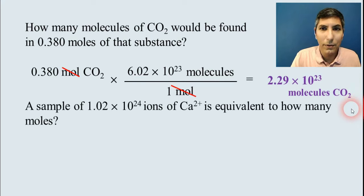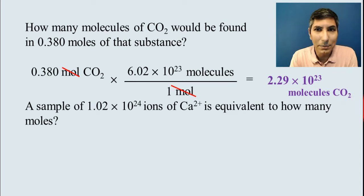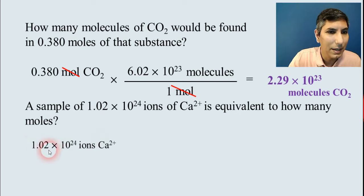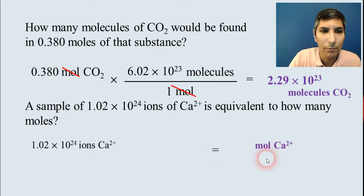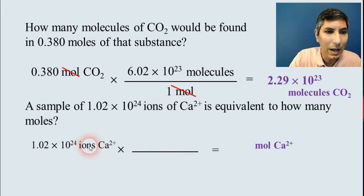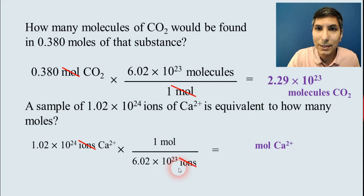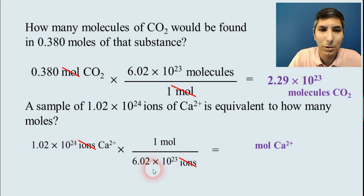And we can go in the other direction as well. If we have a question that says a sample of 1.02 times 10 to the 24th ions of calcium 2 plus is equivalent to how many moles? We work the problem pretty much the same way, except we write down what's given to us here. This time it's 1.02 times 10 to the 24th ions of calcium. And this time we're converting it to moles. So at the end we're going to have moles. And our conversion factor this time, ions will go on the bottom and moles will go on the top. And we know that 1 mole is equivalent to Avogadro's number of ions. So we can cancel ions. And this time we're going to divide. We take 1.02 times 10 to the 24th and divide that by 6.02 times 10 to the 23rd. And when you key that in, you should get an answer of about 1.69 moles of calcium.